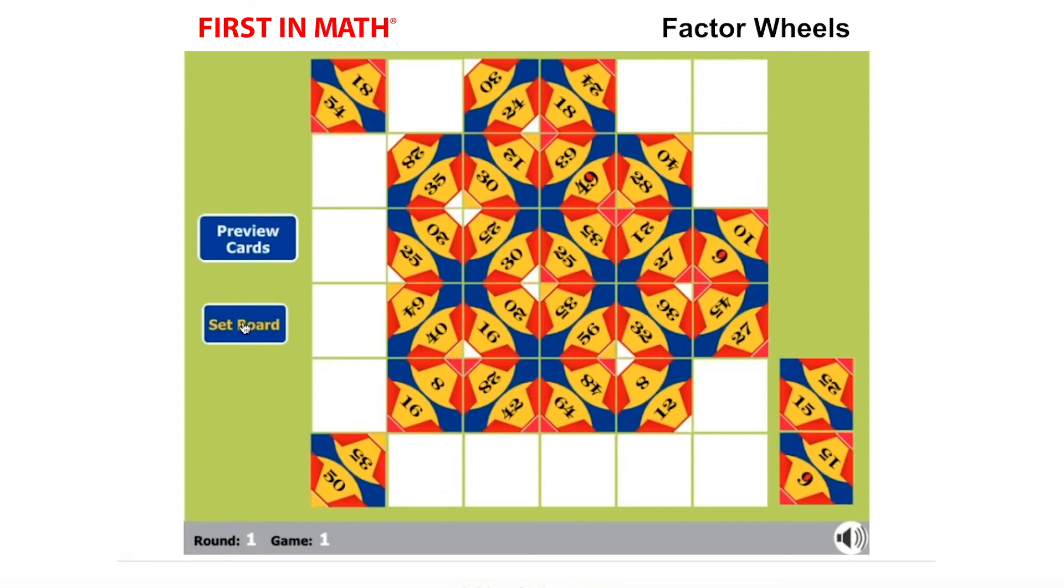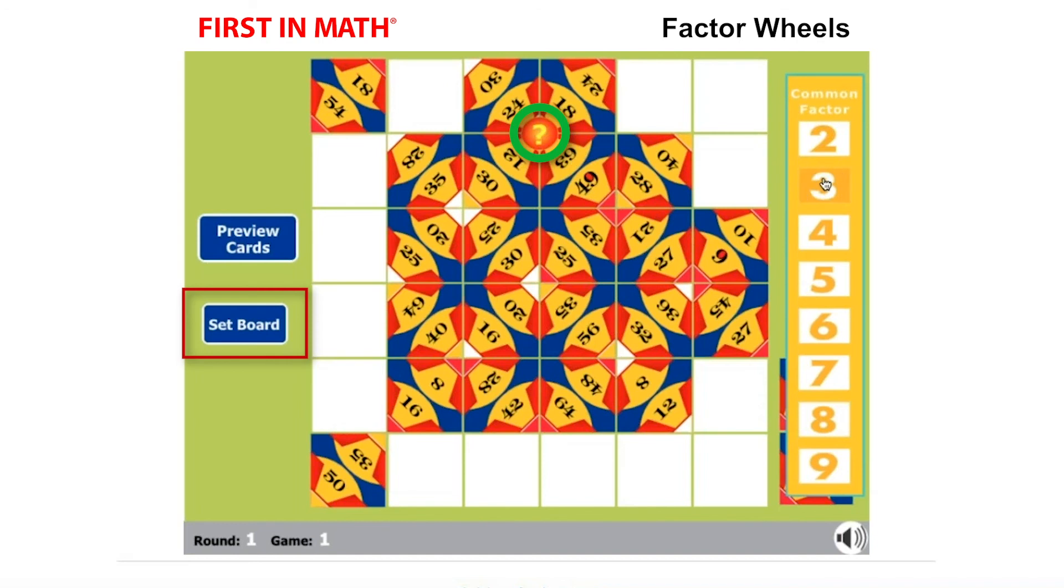When you feel you've made as many wheels as you can, submit and check your work by clicking the set board button on the left. Assign the factor you use to the question marks that appear in the middle of each completed wheel.